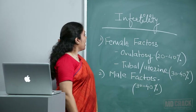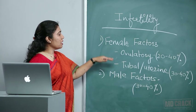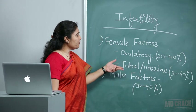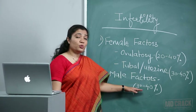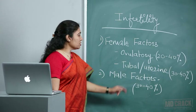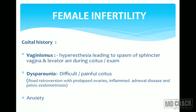As seen on the board, infertility involves female factors and male factors. The two most important female factors are ovulatory and tubal/uterine. Male factor is also very important, sharing almost 30–40% of the responsibility among infertile couples. Ovulatory problems account for 20–40% of female infertility, while tubal pathologies along with uterine causes account for 30–40%.